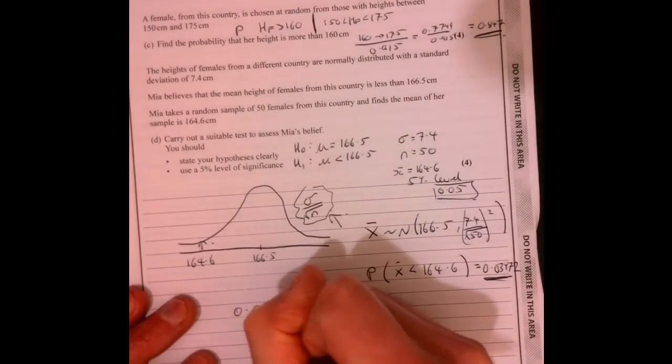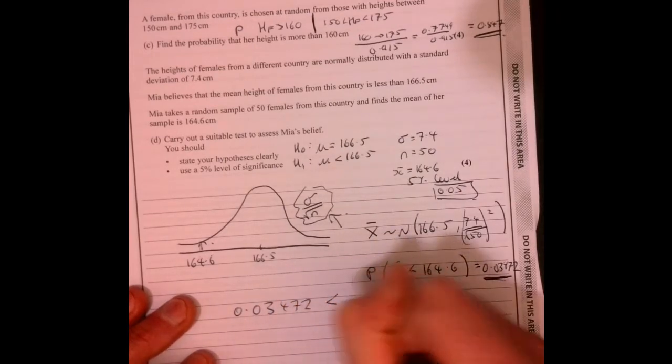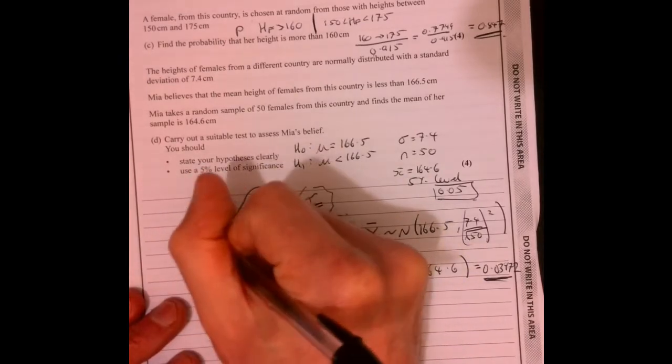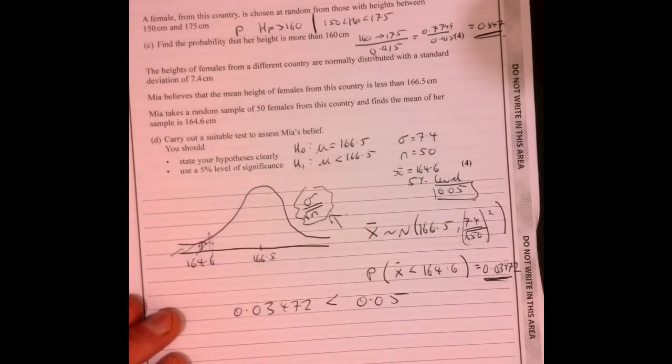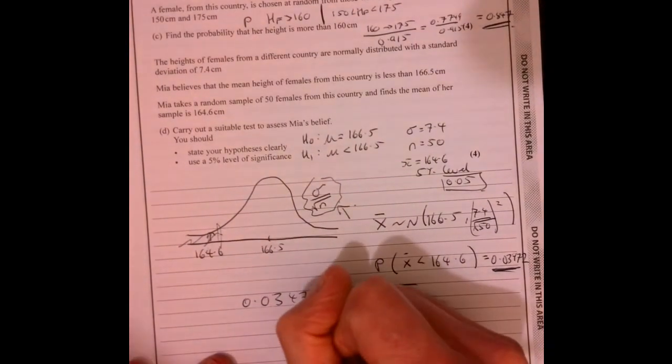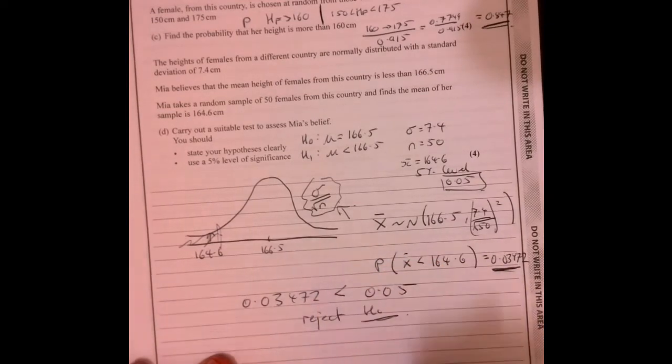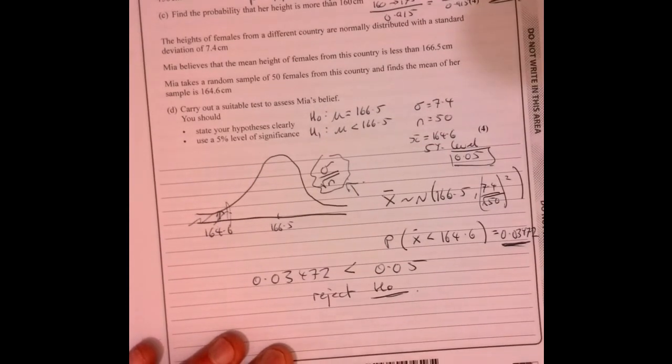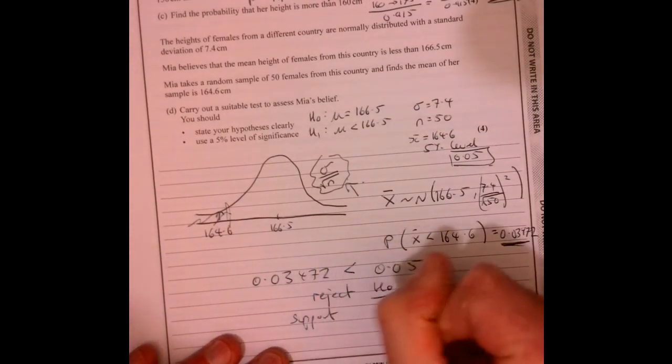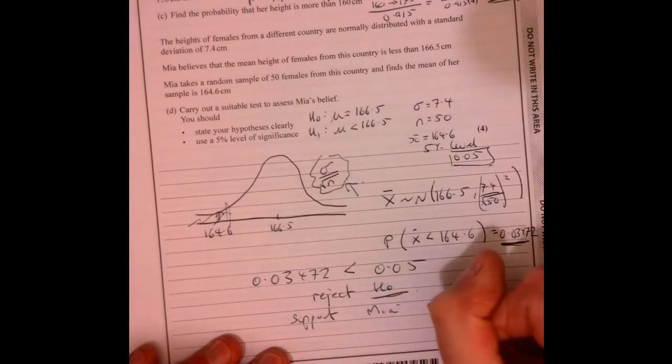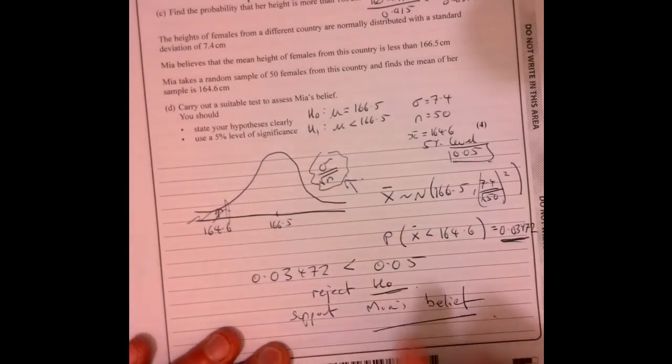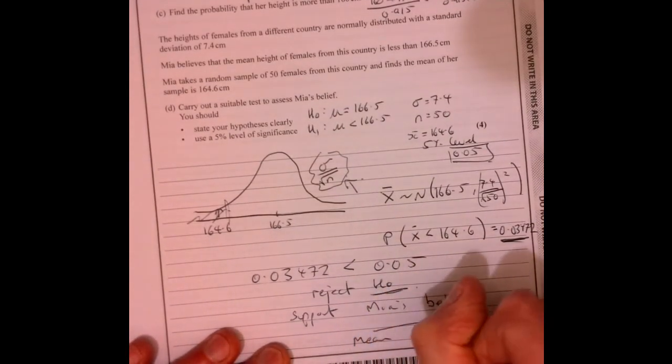That 0.03472 is less than our 5% that we were told to look at. Therefore, it's in this kind of unusual zone, which supports Mia's belief. So what we're going to do is rejecting the null hypothesis. There is evidence to support Mia's belief that the mean is lower.